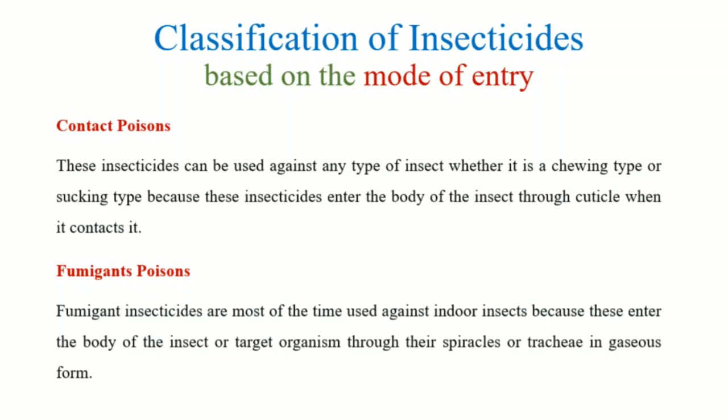Next is classification of insecticides based on the mode of entry. First, contact poisons are insecticides which can be applied to any type of insect — chewing type, sucking type, every type of insect. When these insecticides come into contact with the insect's cuticle, they show negative effects.